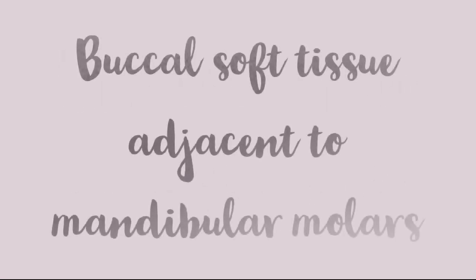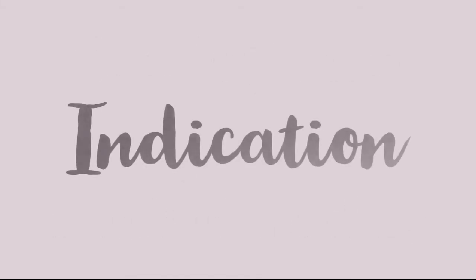It anesthetizes only one thing: the buccal soft tissue adjacent to the mandibular molars — the buccal gingiva, not the lingual gingiva. The lingual gingiva is covered by the lingual nerve; the buccal gingiva is covered by the long buccal nerve. As the names suggest: lingual nerve equals lingual gingiva, long buccal nerve equals buccal gingiva.